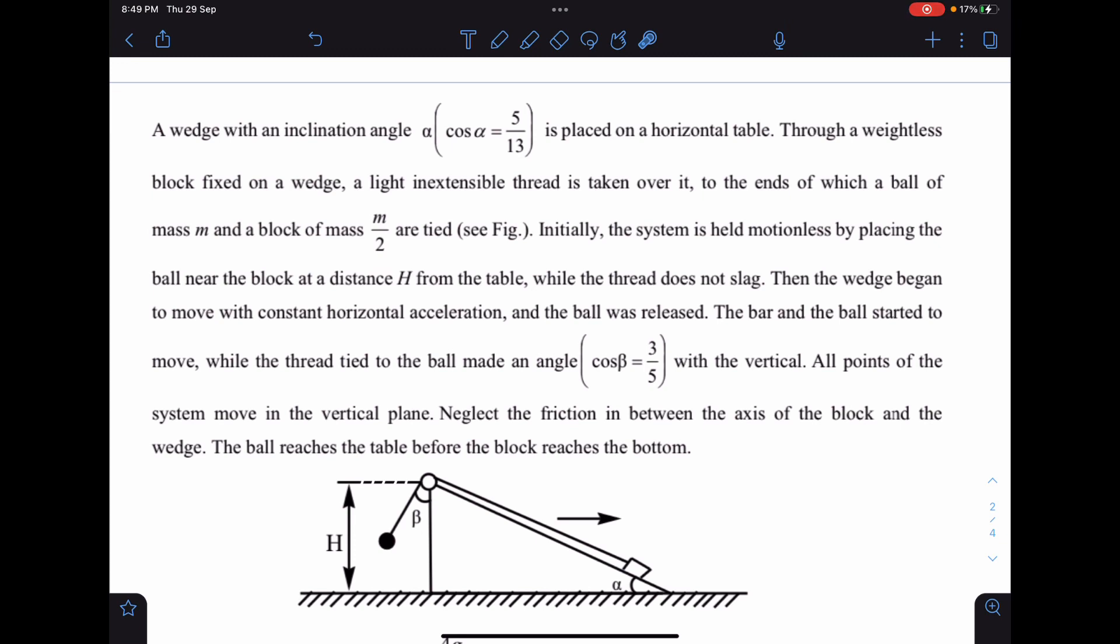Now the wedge began to move with constant horizontal acceleration and the ball was released. The ball started to move while the thread is making angle of beta here, this is given. All the points on the system move in a vertical plane, neglect the friction between the axis of the block and the wedge. The ball reaches the table before the block reaches the bottom.